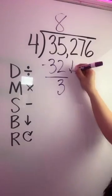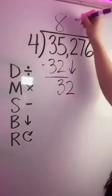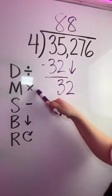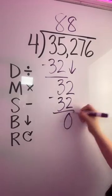You're going to bring down the next digit and you're going to repeat that process. Four goes into 32 exactly eight times. We're going to multiply, eight times four is 32. Next, we're going to subtract. We get a difference of zero.